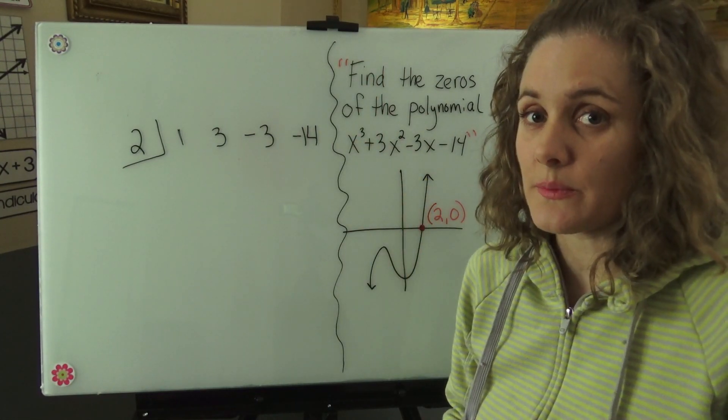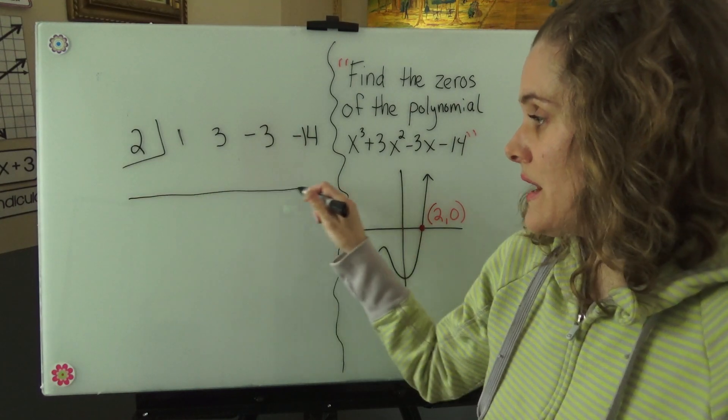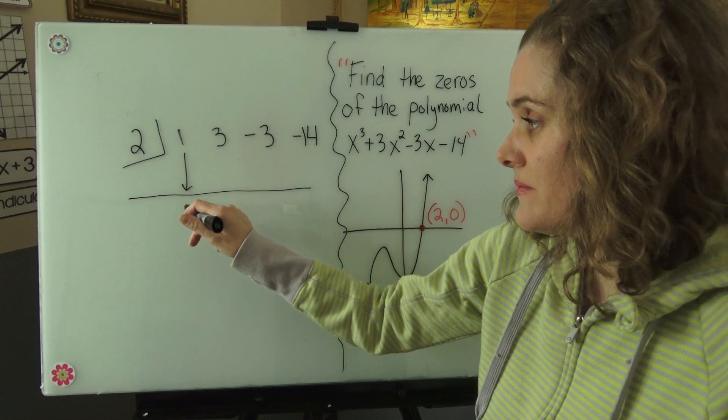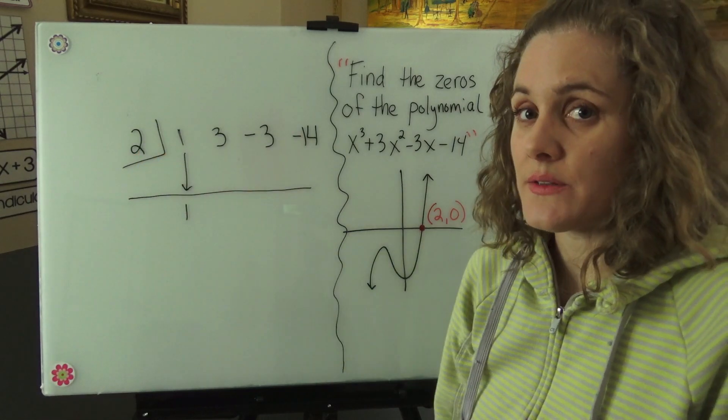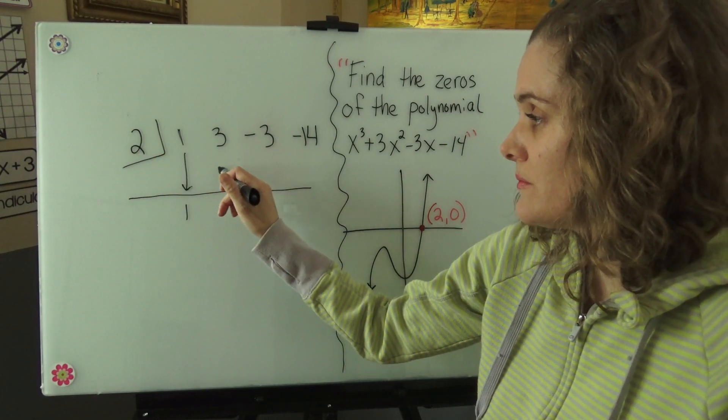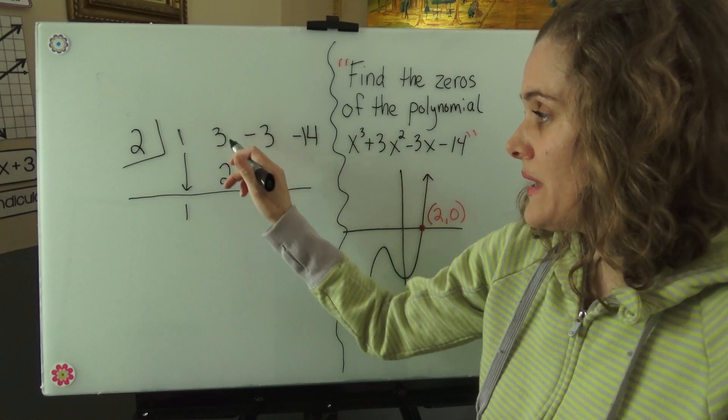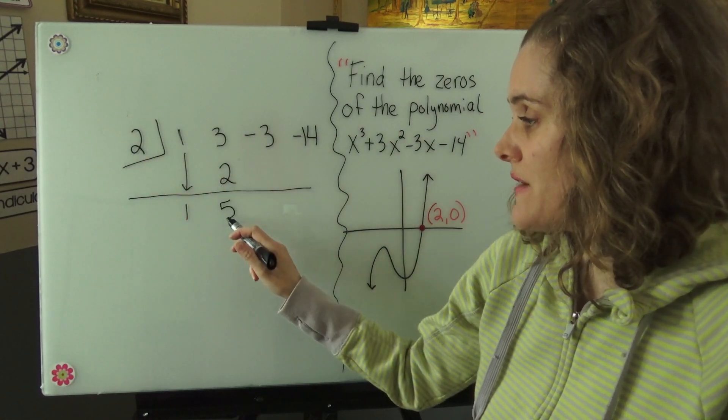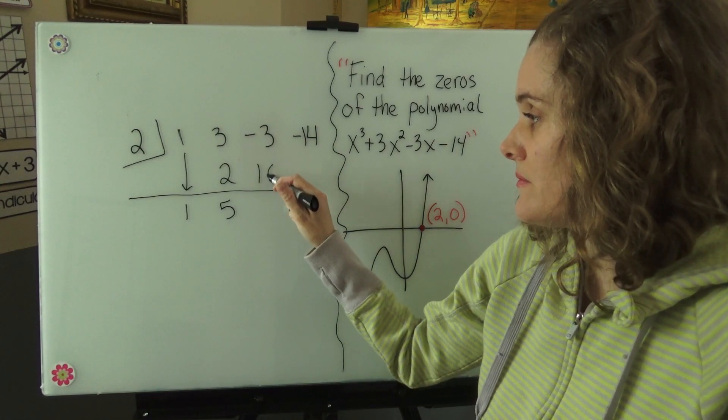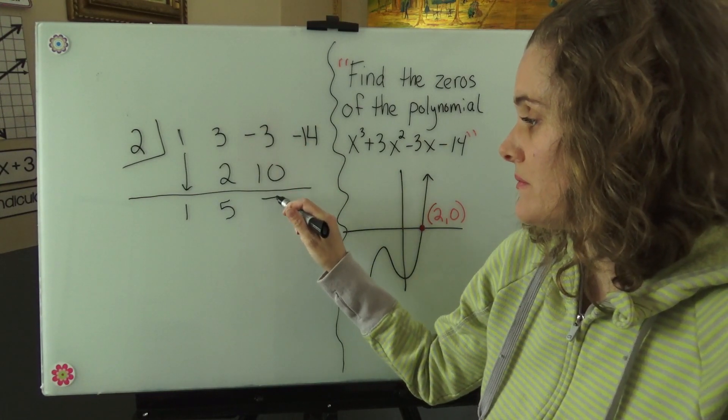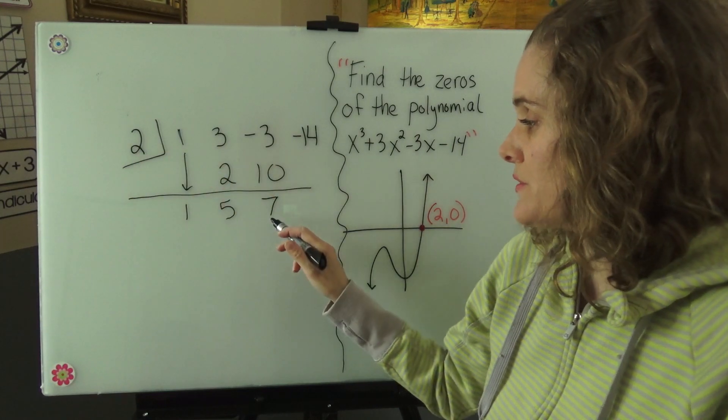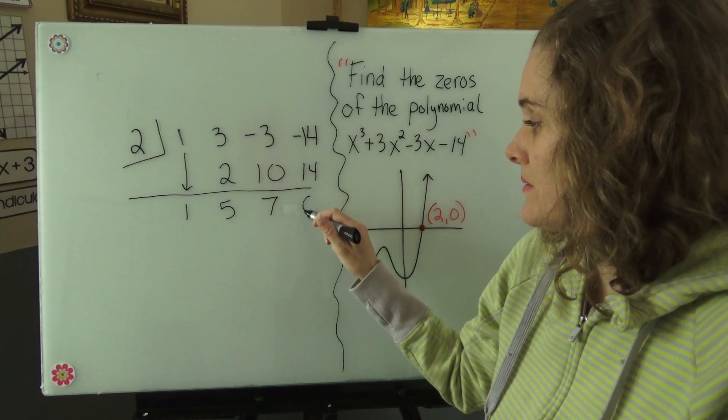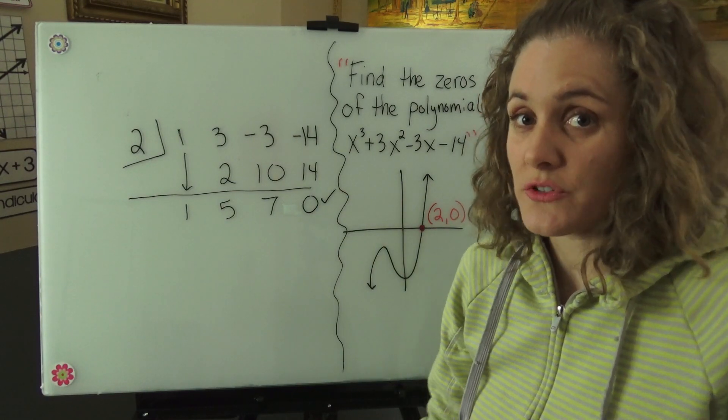Now the process is pretty simple. Draw a line here. That was easy. We bring down the one, and we just multiply and add. Two times one is two, and we add. Two times five is ten, and we add. Two times seven is fourteen, and we add. And we end with zero, which is a good sign.